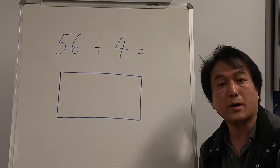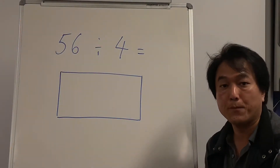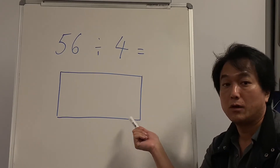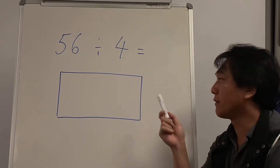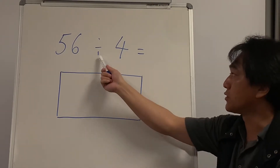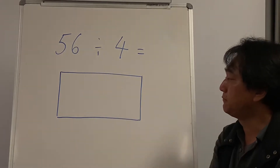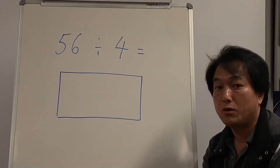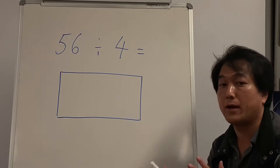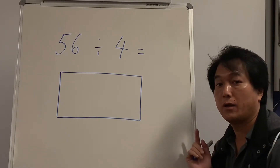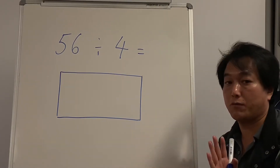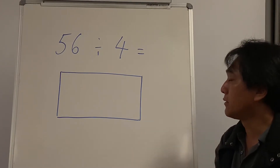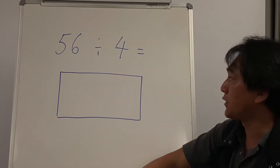So 56 divided by 4 — we're going to use the area model. Before we talk about the division, if you watched the last video you may have understood that division and multiplication have very close relationships, so let's do this first.